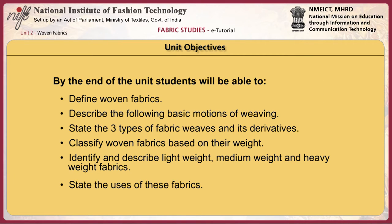By the end of this unit, students will be able to define woven fabrics, describe the following basic motions of weaving — shedding, picking and beat up — state the three types of fabric weaves and their derivatives, classify woven fabrics based on their weight, and state the uses of these fabrics.